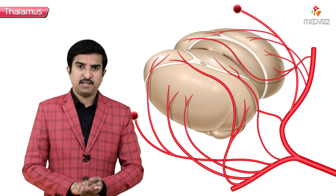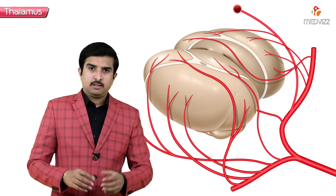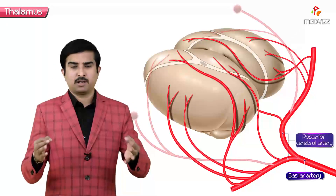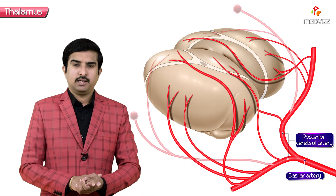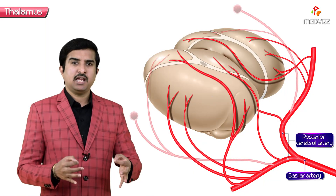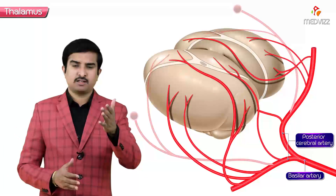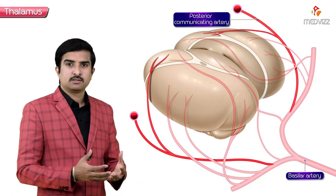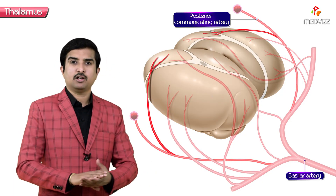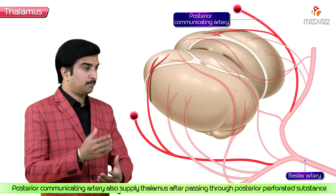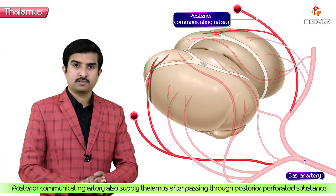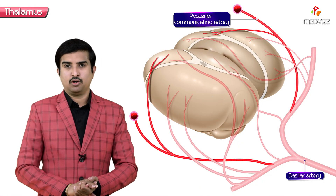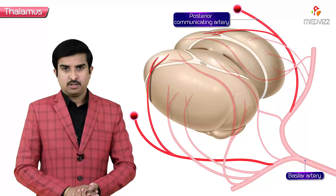Next is the arterial supply of the thalamus. The primary blood supply of the thalamus is mainly from the posterior cerebral artery, which supplies the major portion of the thalamus. There are other contributing branches from the posterior communicating artery, which also supply the thalamus after passing through the posterior perforated substance.